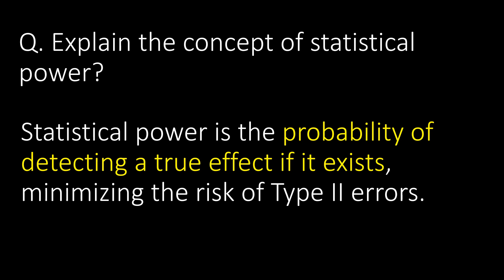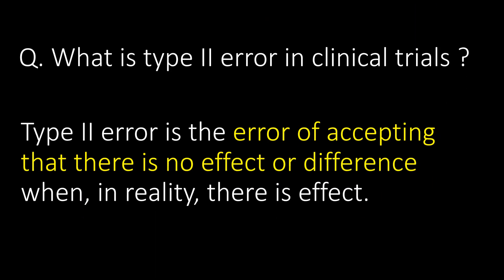Explain the concept of statistical power. Statistical power is the probability of detecting a true effect if it exists, minimizing the risk of type 2 errors. What is a type 2 error in clinical trials? A type 2 error is the error of accepting that there is no effect or difference when in reality there is an effect.